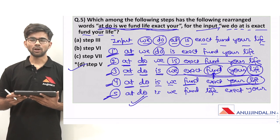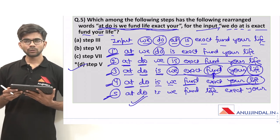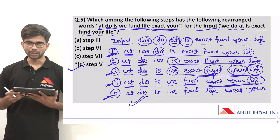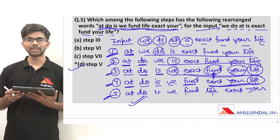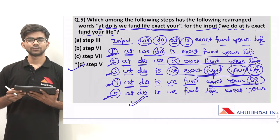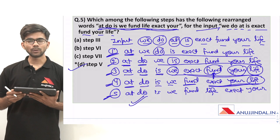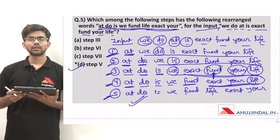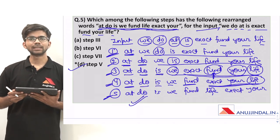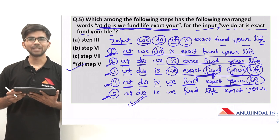This was an easy example of an input-output type question. In the next video I will be discussing a comparatively difficult question. Generally students find this topic difficult, but actually it is not that difficult. I have tried to explain the concept in a simple manner. Input-output is an important topic for RBI Grade B prelims, so prepare this topic well. If you have learned anything new from this video, do subscribe to our channel. You can post queries in the comment section below and watch my previous videos on other reasoning topics. All the very best for your examination. Have a nice day.